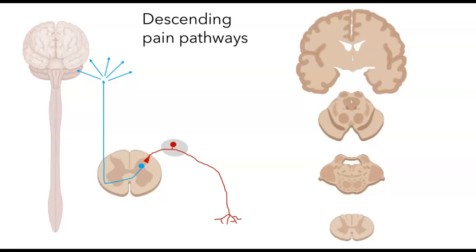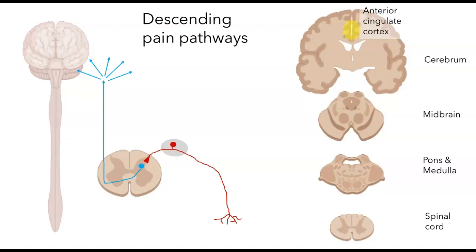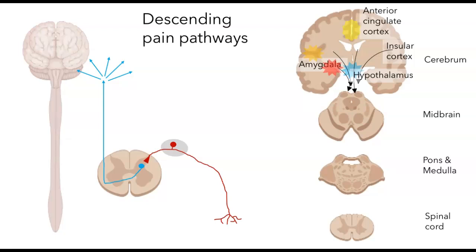Looking at sections through the brain — including the cerebrum, midbrain, pons, and spinal cord — several regions feed into this descending pathway. These include the anterior cingulate cortex and insular cortex, both involved in the emotional perception of pain. The amygdala, associated with fear, and the hypothalamus, involved in visceral reactions, also contribute. All of these regions can send projections down to the brain stem, where they make synapses.